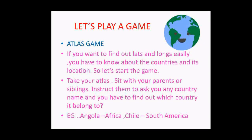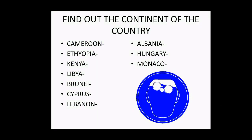Now, before we wind up the session, let's play a game. This is an atlas game. If you want to find out latitudes and longitudes easily, you have to know about the countries and its locations. So, let's start the game. Take your atlas, sit with your parents or siblings. Instruct them to ask any country name. And you have to find out which continent it belongs to. Example, Angola. Which continent it belongs to? Africa. The same way, Chile. Which continent it belongs to? South America.